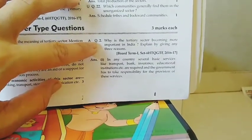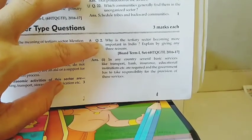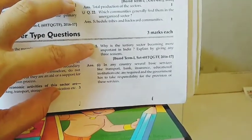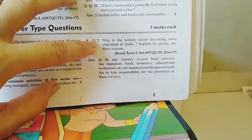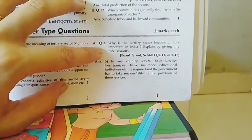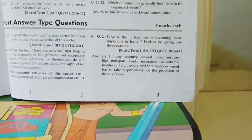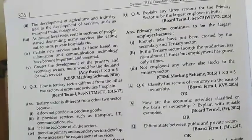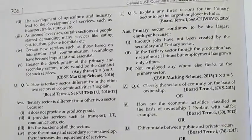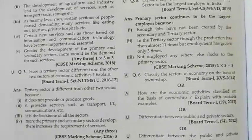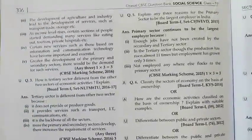The next question is: the tertiary sector is becoming more and more important in India — explain by giving reasons. So the tertiary sector is getting importance because of the following reasons. The first reason is that there are basic services like transport, public distribution system, insurance, postal services, and educational institutions, for which the government has to take responsibility. Second point: as agriculture and the primary and secondary sectors grow, there will be more and more demand for tertiary sector services like transport.